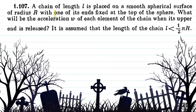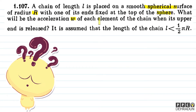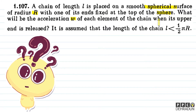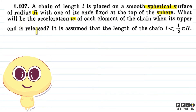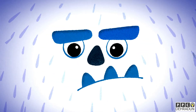The question says: a chain of length L is placed on a smooth spherical surface of radius capital R, with one of its ends fixed at the top of the sphere. What will be the acceleration W of each element of the chain when its upper end is released? It is assumed that the length of the chain, small L, is less than πR/2.